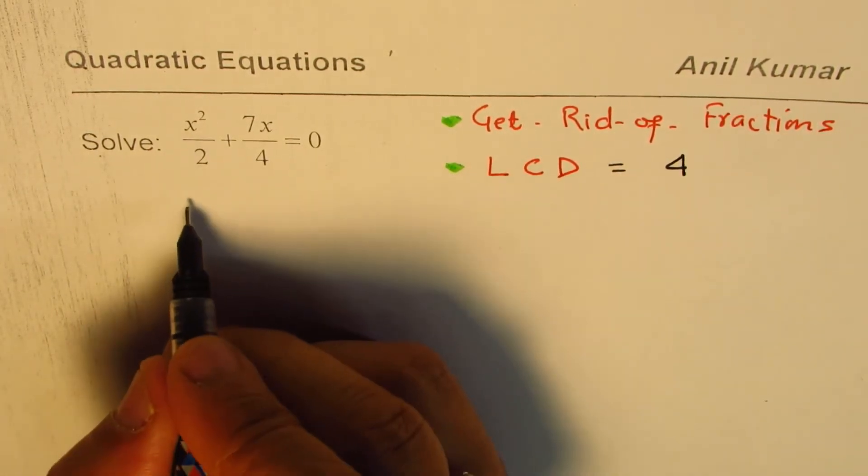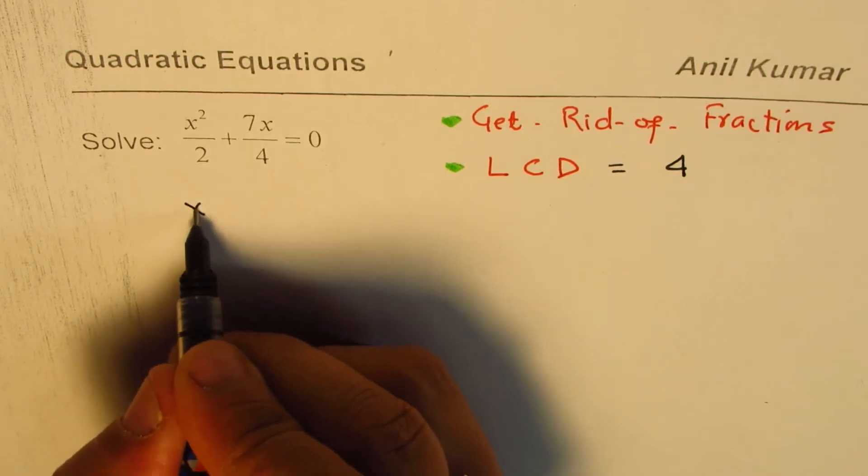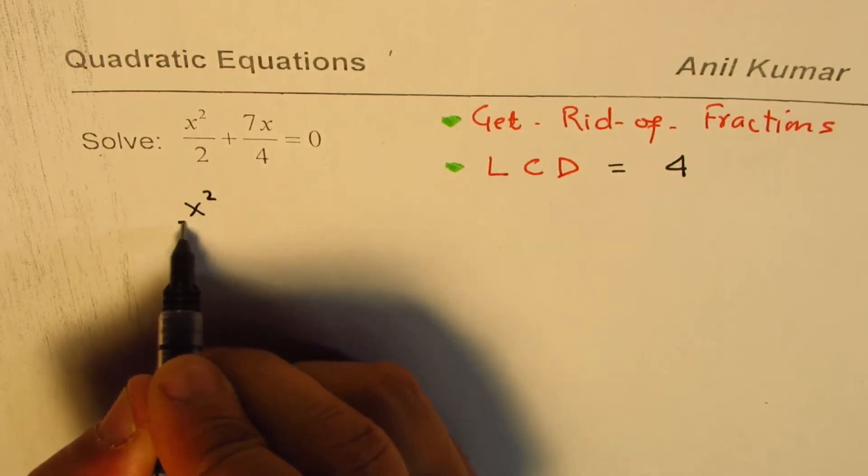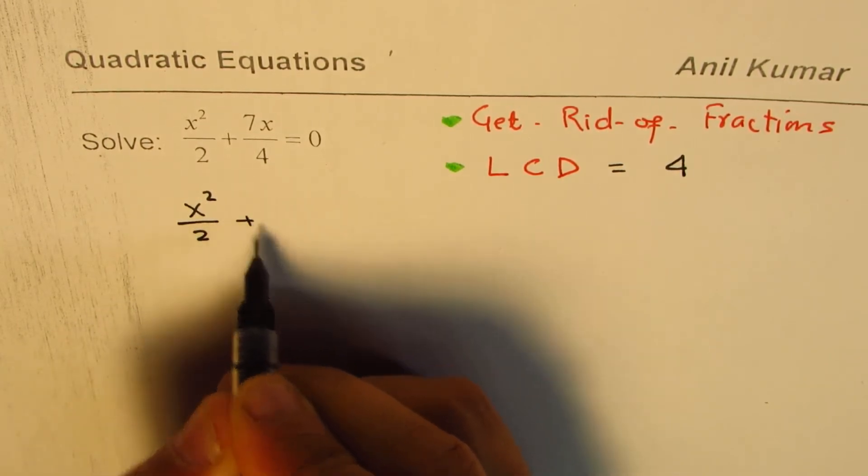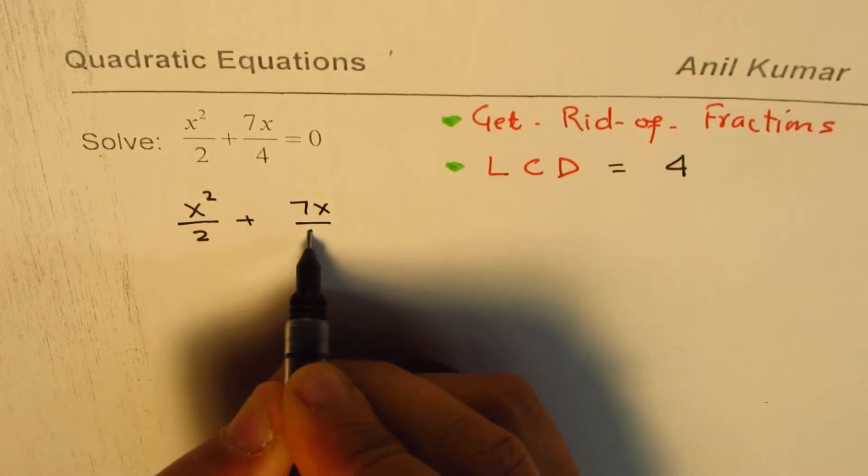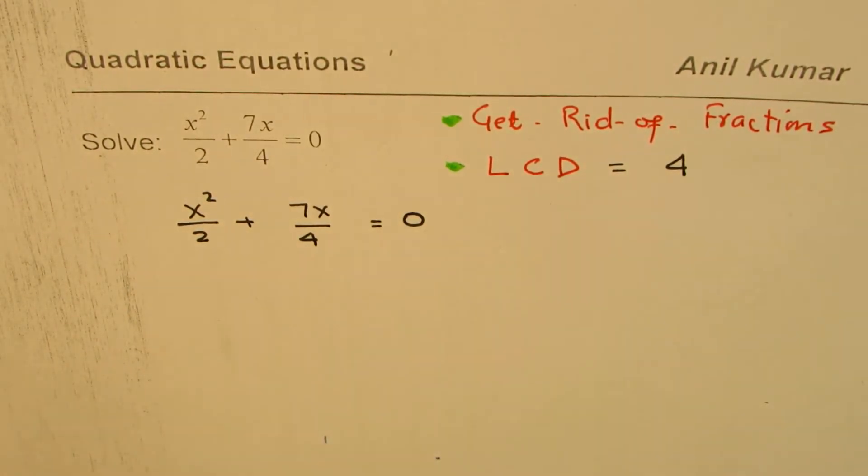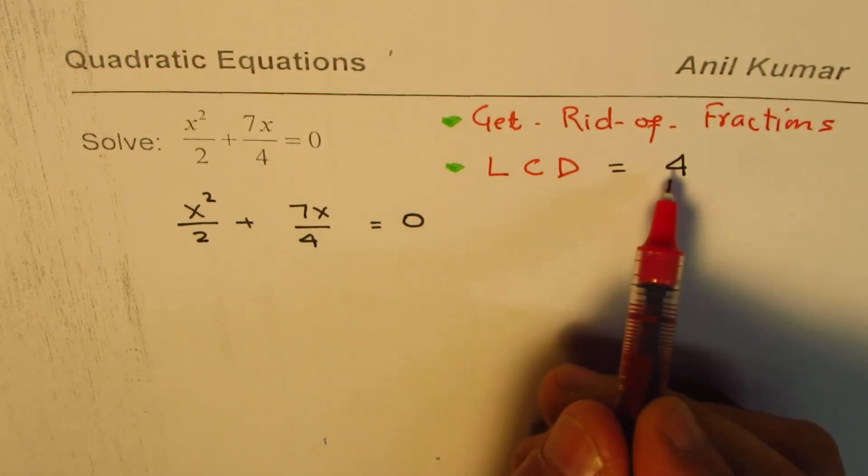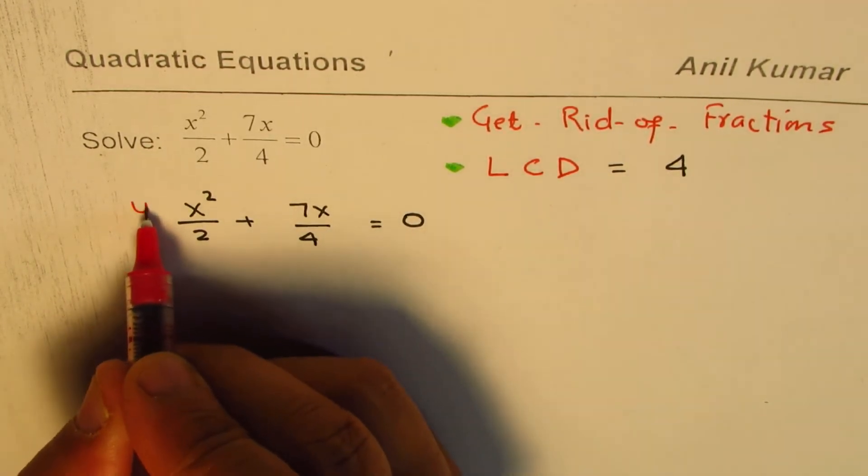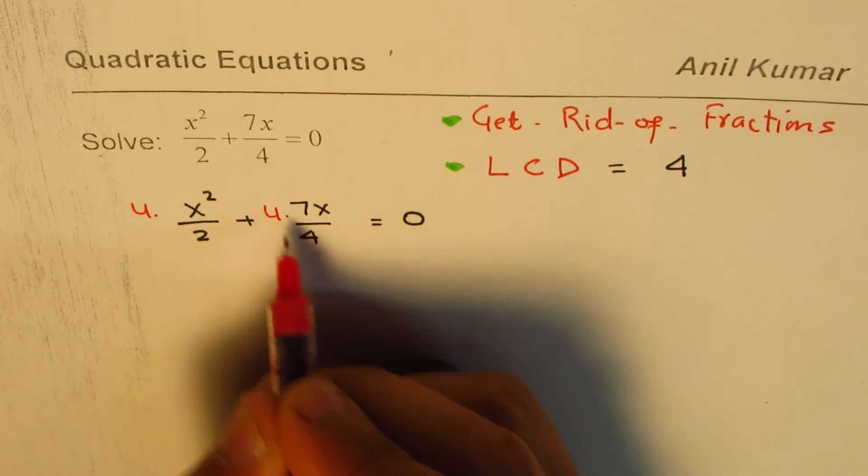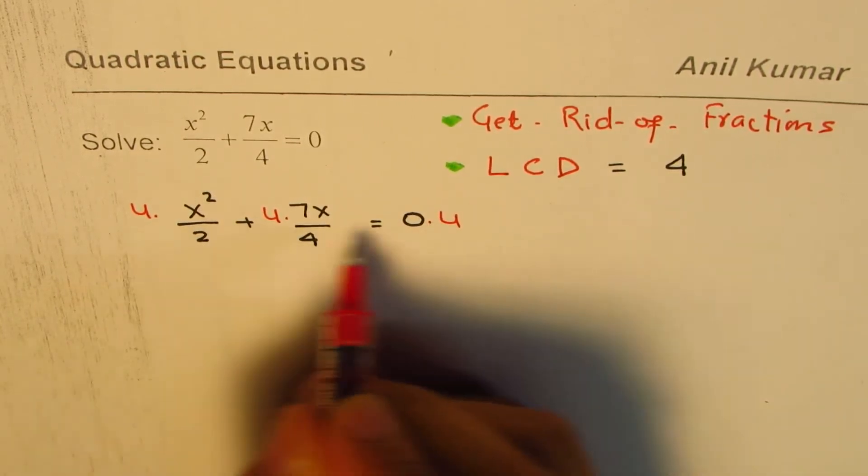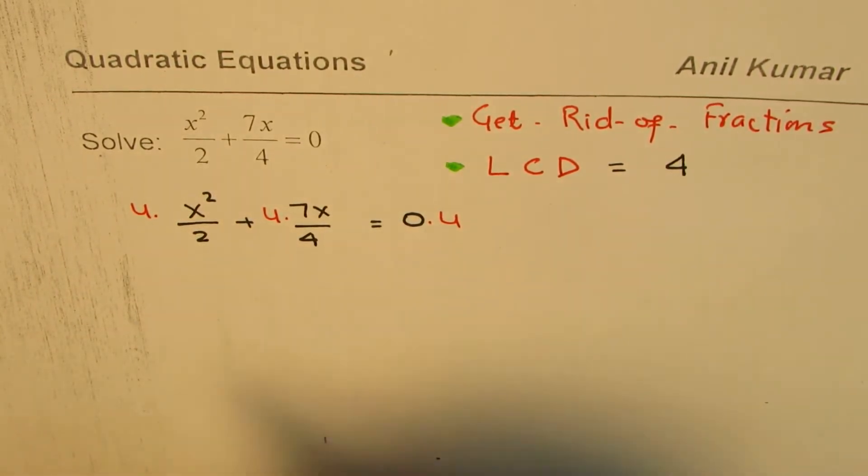So let's rewrite this equation and multiply each term by 4. We have x squared over 2 plus 7x over 4 equal to 0. So what we'll do now here is, since the lowest common denominator is 4, we'll multiply each term by 4, both sides.